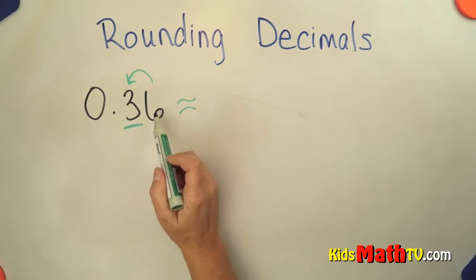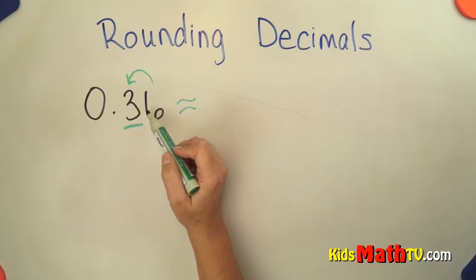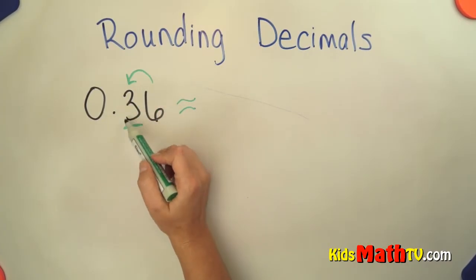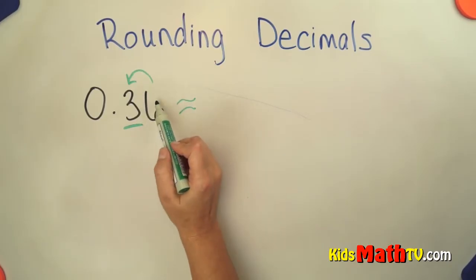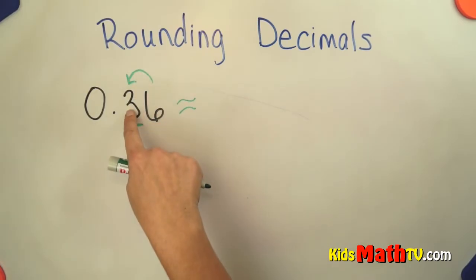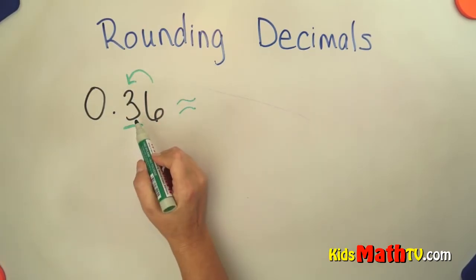The rule is: if this number is 5 or greater, it makes this number move up 1. If it is 0 to 4, this number stays the same. So since this 6 is 5 or greater, it's telling this number to move up 1 tenth.